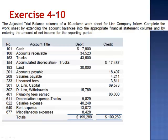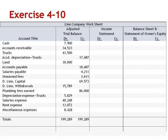Exercise 10. The adjusted trial balance columns of a 10-column worksheet for Linn Company follow. Complete the worksheet by extending the account balances into the appropriate financial statement columns and by entering the amount of net income for the reporting period. Every account belongs on either the income statement, the statement of owner's equity, or the balance sheet, so this is really just a matter of sorting the accounts out.